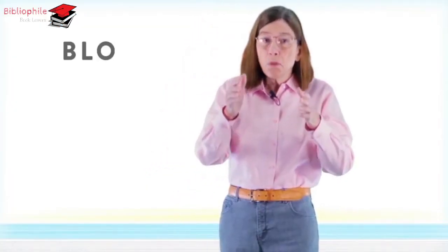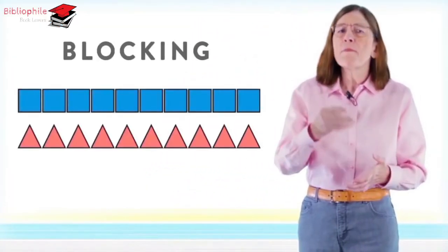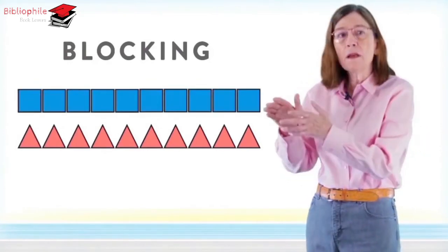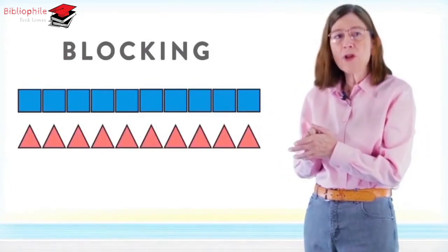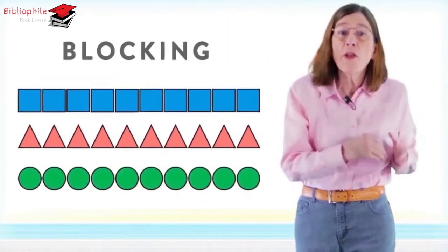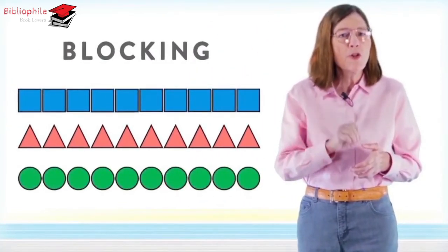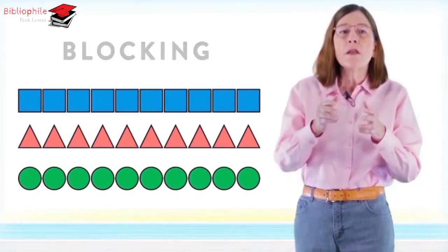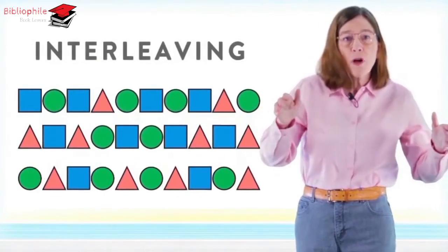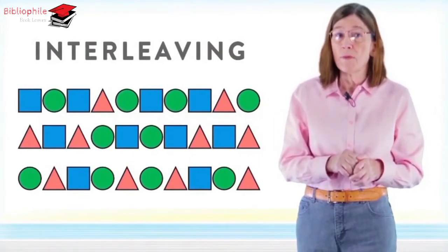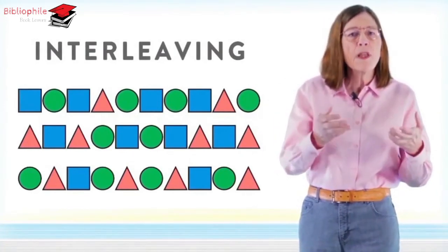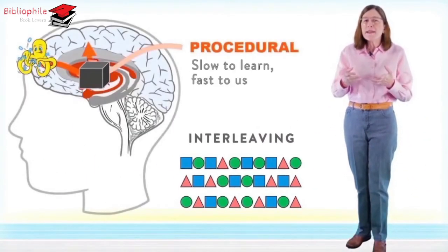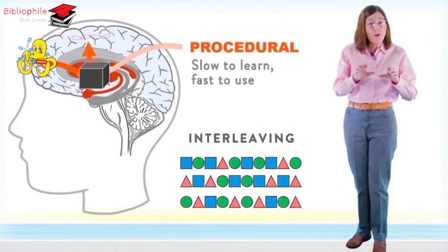People often learn by blocking. That is, they might solve 10 problems of a certain type, and then 10 more problems of another type, and then perhaps 10 more of yet another type. But it's much better, once you've got a feel for certain kinds of problems, to interleave with other kinds of somewhat different problems. Mixing up the types of problems you solve lets your procedural system develop a sense of the different patterns needed to solve related, but somewhat differing problems.